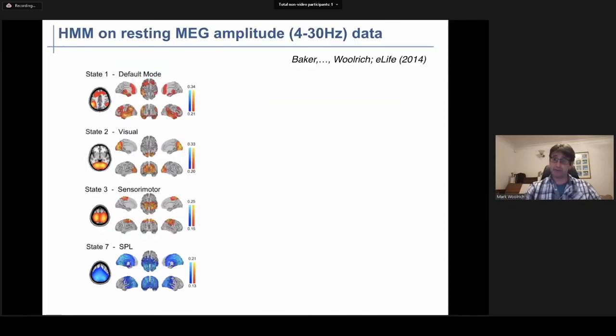So here we're going to look at applying the HMM to MEG data, or magnetoencephalography. We're looking at data in the low frequency range between 4 and 30 hertz because this has been shown to be a good frequency range to find good connectivity when we take the time-averaged approaches I mentioned earlier. When we do this, we find again a good mix of primary sensory motor and cognitive networks that we typically see in the resting state.